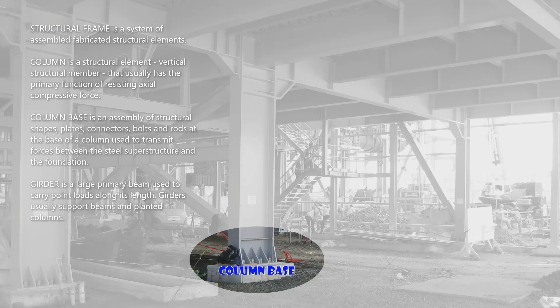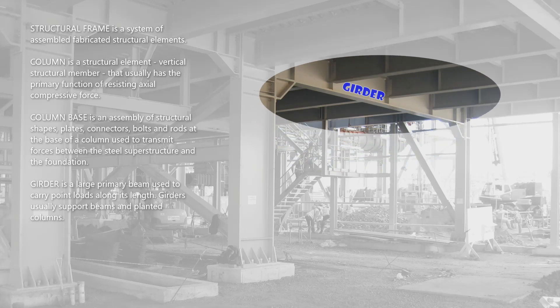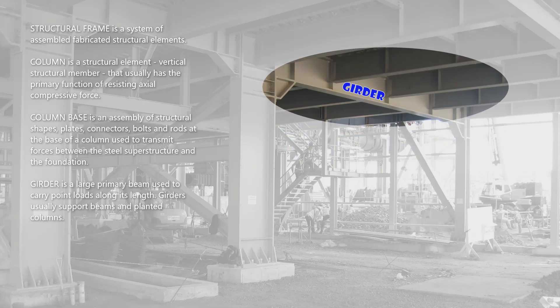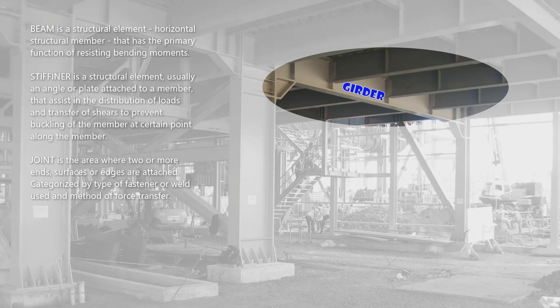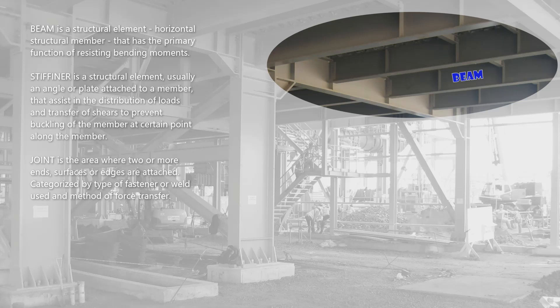A girder is a large primary beam used to carry point loads along its length; girders usually support beams and planted columns. A beam is a horizontal structural member that has the primary function of resisting bending moments.